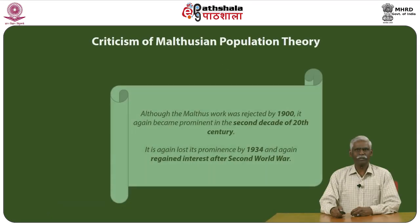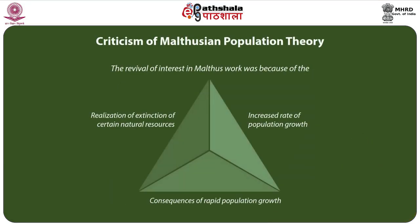In the Malthusian population theory there are criticisms that have come up mainly from various subsequent scholars. Although Malthus's work was rejected by 1900, it again became prominent in the second decade of the 20th century. It again lost its prominence by 1934, and regained interest after the Second World War. The revival of interest was because of: the increased rate of population growth; the consequences of rapid population growth; and the realization of the extension of certain natural resources.